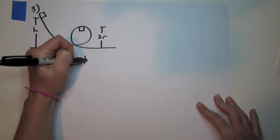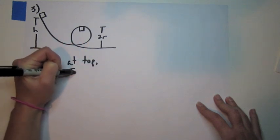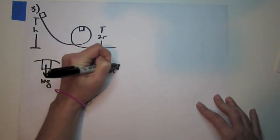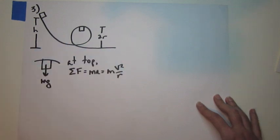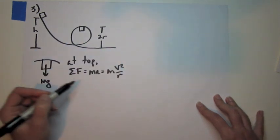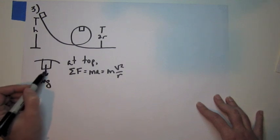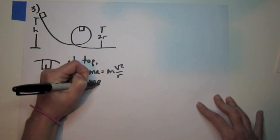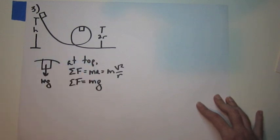So this goes back to the last unit. We know that at the top of the circle, the net force equals ma. We know that it's a centripetal force, so it's mv² over r. And we also know that since we're looking for the minimum speed, the only force that's providing that inward acceleration is the weight.